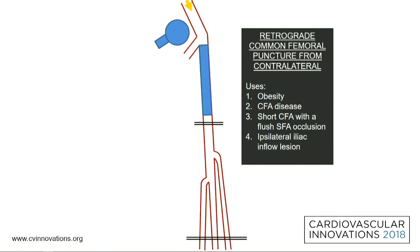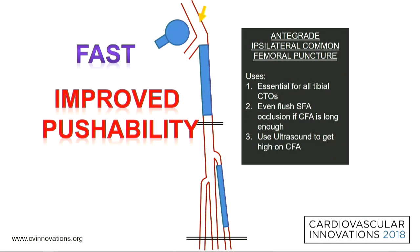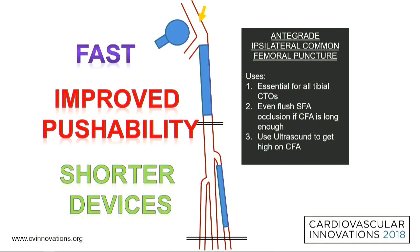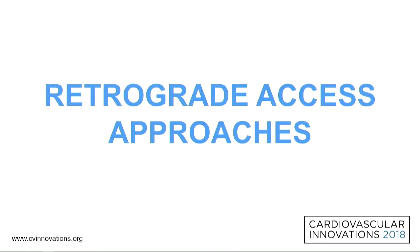The most common approach in the United States is a contralateral up-and-over approach. I use this rarely — really only for obese patients, someone with common femoral or iliac disease I'm going to treat on the way through, or with a very short common femoral artery and a flush SFA occlusion. For everything else I'm doing an ipsilateral antegrade approach, which has several advantages: it's faster, gives improved pushability, and enables use of shorter devices. It's very important to get a good ultrasound image because you need to make a high common femoral artery puncture, particularly with proximal SFA disease. This can be achieved about 80 to 90 percent of the time, allowing placement of a short sheath in the common femoral artery.